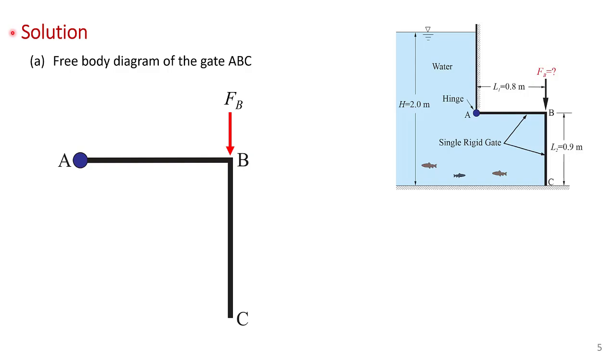So starting with the free body diagram, here's the gate ABC floating freely in space. This is really a simple statics problem. What we're going to do is put all the forces on the gate, then take moments about some convenient point to find the force at B. For static equilibrium, the sum of the moments about any point on the gate will be zero.